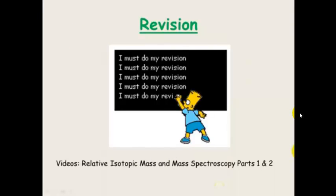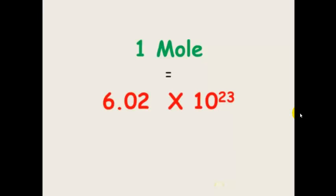A little bit of revision. If you haven't watched or learnt anything about relative isotopic mass and mass spectroscopy, have a look at those videos before you continue with this. One mole equals 6.02 × 10²³ of anything. When you're counting atoms or molecules, because they're so small, one mole is equivalent to 6.02 × 10²³. It's simply just a counting tool.